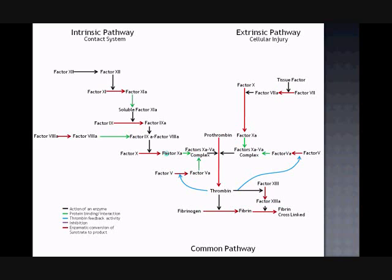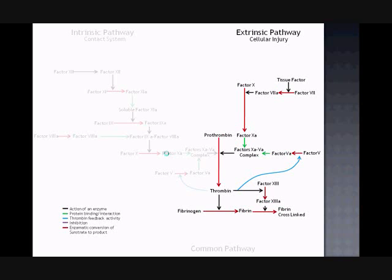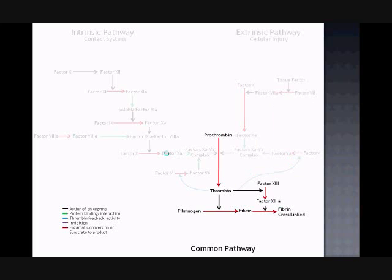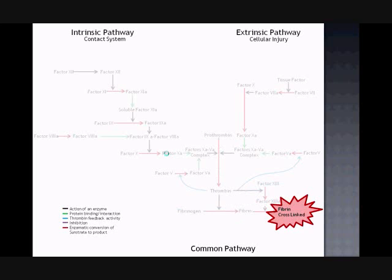The main thing to understand from this diagram is that there is an intrinsic pathway initiated by direct contact with the site of injury and an extrinsic pathway. The two pathways share a mutual pathway known as the common pathway, which converts prothrombin into thrombin, and thrombin is used to convert fibrinogen into fibrin. The take-home message is that the final outcome of the coagulation cascade is fibrin, which forms a cross-linking in the clot formation.